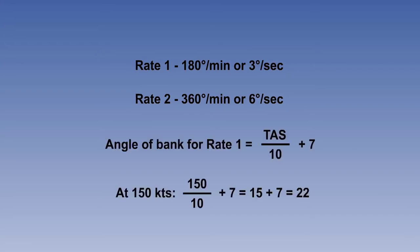A useful rule of thumb for calculating the angle of bank required to achieve a Rate 1 turn is true airspeed over 10 plus 7. For example, at 150 knots TAS, the bank required is 22 degrees.